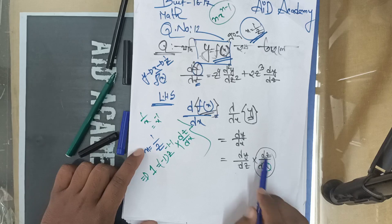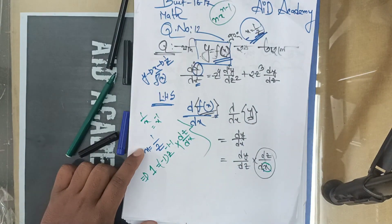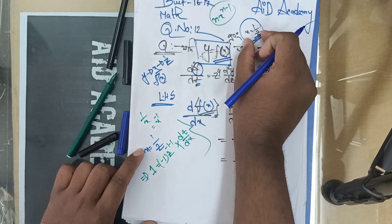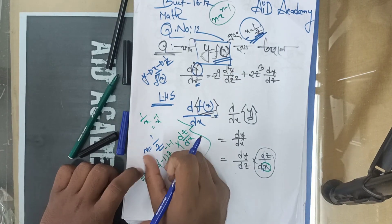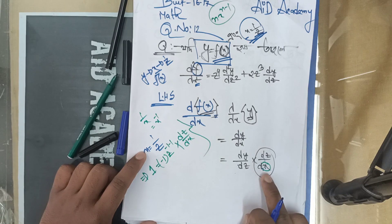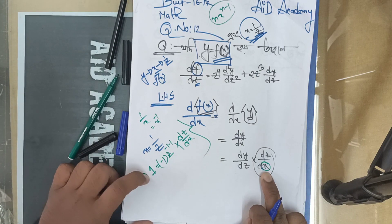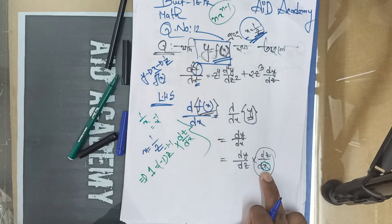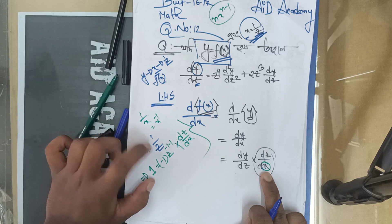What is DZ by DX? We give the Z to you. We have to do a different situation. 1x is 1 by Z. We have to do DZ by DX. 1 by z.